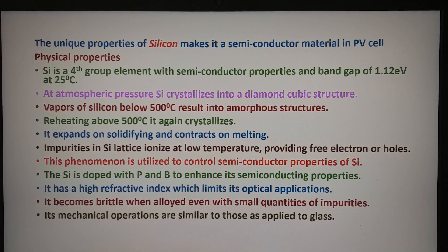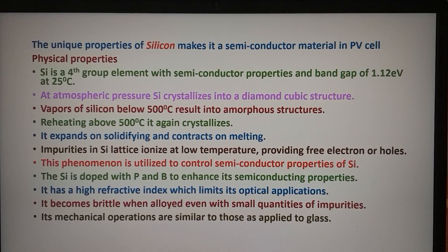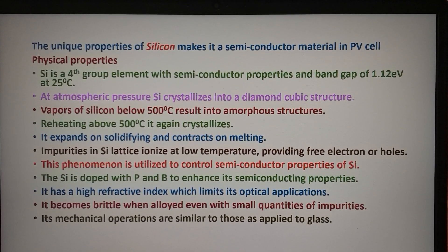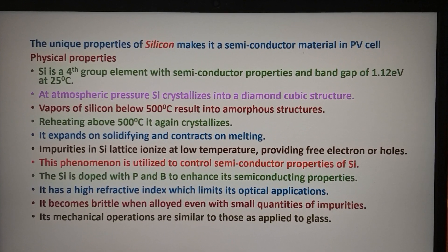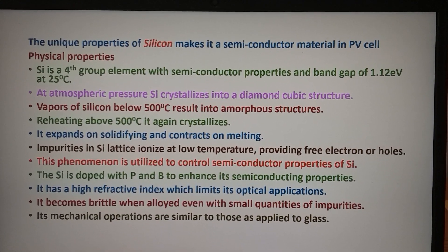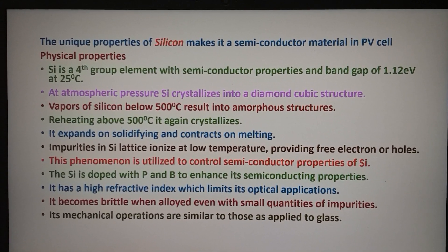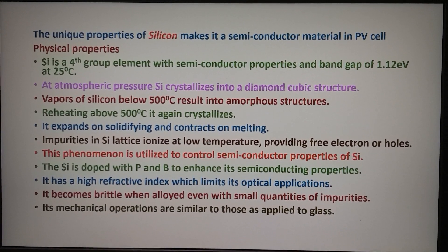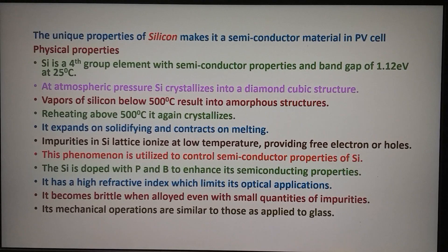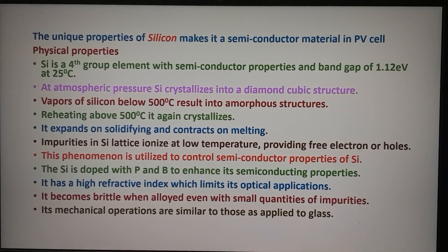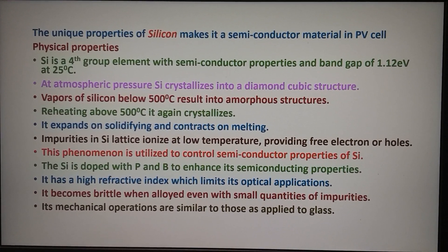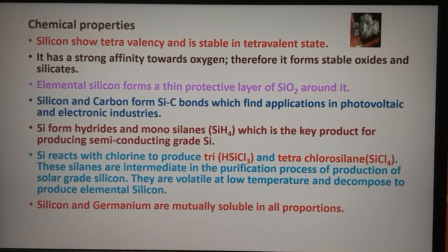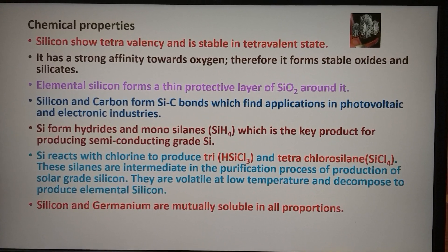If silicon is doped with phosphorus and boron, it enhances its semi-conducting properties. It has a high refractive index, which limits its optical applications. On alloying with small quantities of impurities, it becomes brittle. The mechanical operations are similar to that of glass. The chemical properties of silicon are also very important.